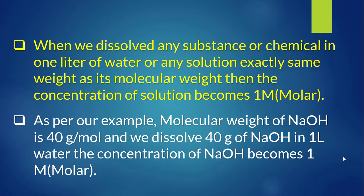When you dissolve any substance in 1 liter of water using exactly the same mass as its molecular weight, the concentration of the solution becomes 1 molar. In our example, the molecular weight of NaOH is 40 g/mol, and we dissolved 40 grams of NaOH in 1 liter of water, so the concentration becomes 1 molar.